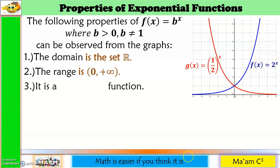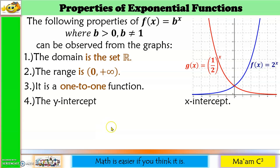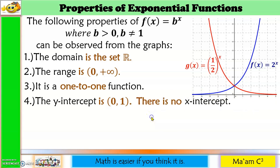Both graphs represent one-to-one functions. The y-intercept is the point where the graphs cross the y-axis, which is the point (0, 1). For the x-intercept: since the graphs never touch the x-axis, the x-axis serves as an asymptote, so there is no x-intercept.